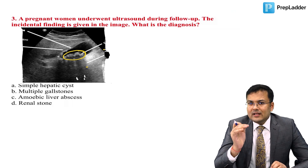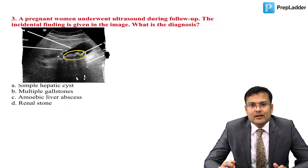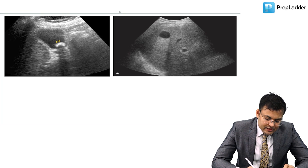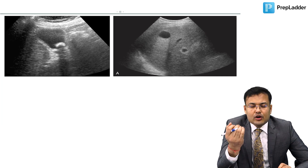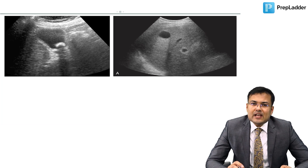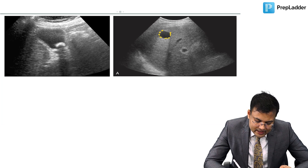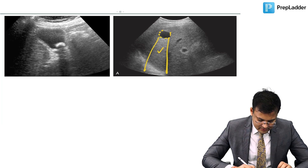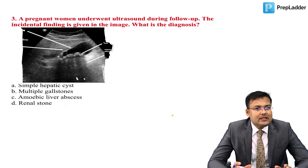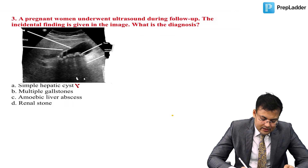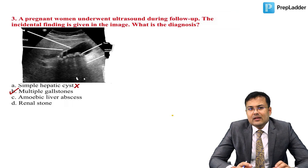In simple hepatic cyst, the content is clear and there is posterior acoustic enhancement. With stones, there is darkness behind — posterior acoustic shadowing. Looking at the options: simple hepatic cyst has posterior acoustic enhancement (incorrect), amoebic liver abscess does not show this shadowing, and it is not a renal stone. The correct answer is multiple gallstones.